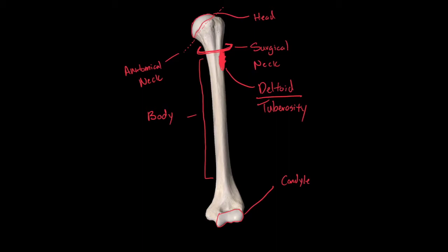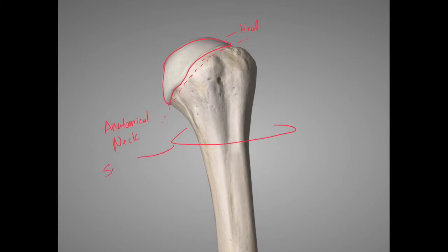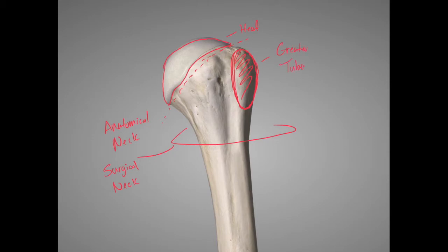Zooming in closer, we have the head of the humerus, our anatomical neck, and our surgical neck. Right here you see this large bump on the lateral proximal part of the humerus — this is going to be called the greater tubercle of the humerus. And we have a smaller one projecting anteriorly, which is going to be called the lesser tubercle of the humerus.